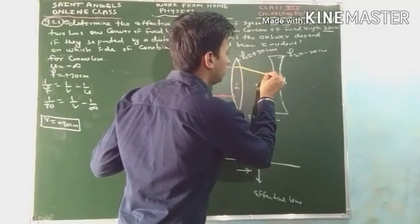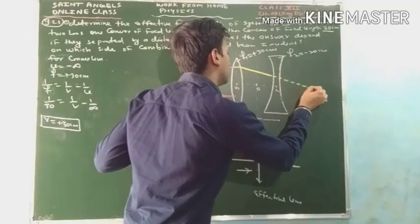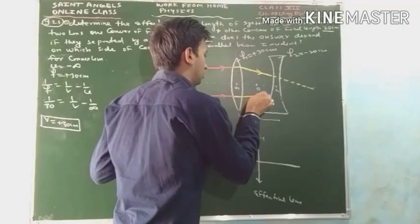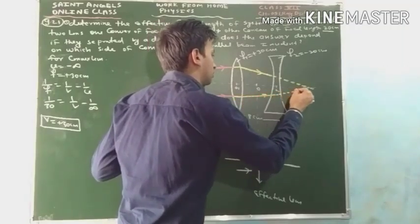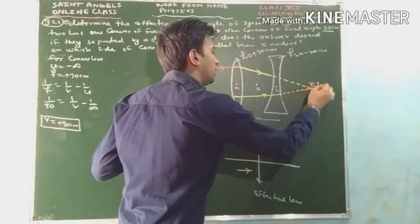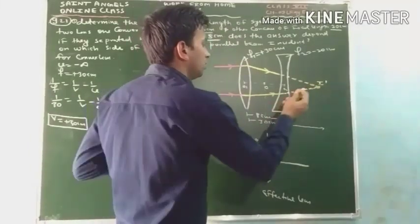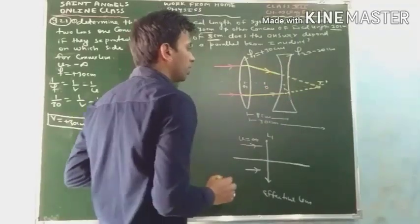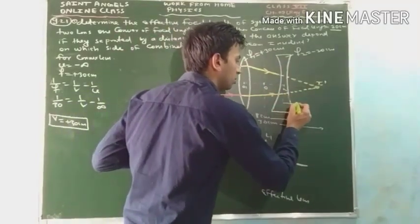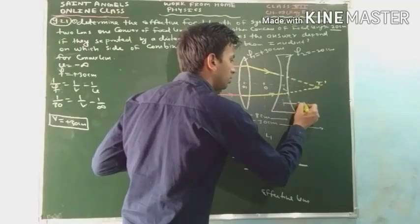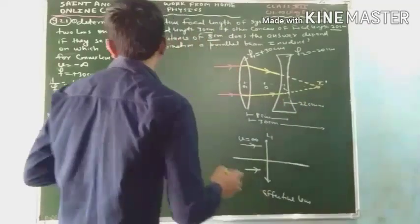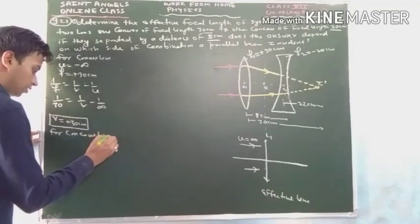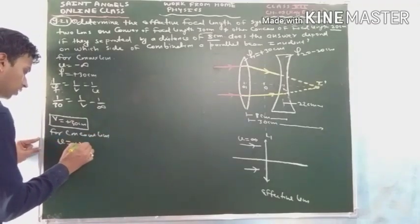Now draw the ray diagram. It is clear that the image I′ formed by the convex lens acts as a virtual object for the concave lens. The distance of this virtual object from the concave lens is 22 cm (since the lenses are 8 cm apart and 30 − 8 = 22 cm). Therefore, for the concave lens, u = +22 cm.